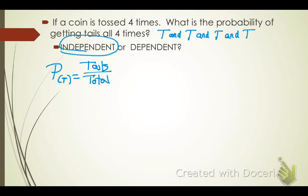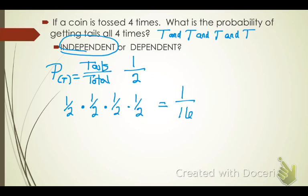So I'm going to find the probability of getting tails. Remember, when finding probability, it's always your favorable over your total. There's only one tail on a coin, so that's 1, and there are only two choices — heads or tails — so the total is 2, giving one-half. The probability of getting tails four times in a row would be one-half times one-half times one-half times one-half, which is one-sixteenth.